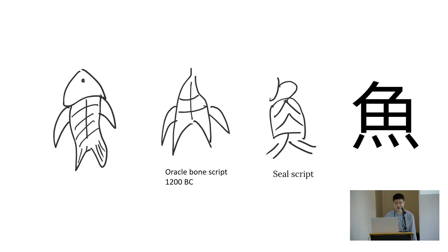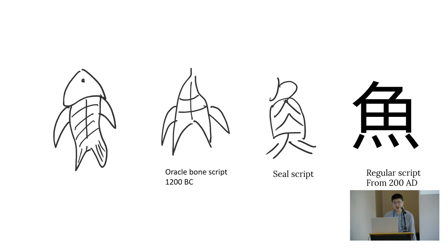And then we wrote like this, and nowadays, at least in Taiwan or in Japan, that's a regular script from around 200 AD. We write like this. Basically, it's just a picture of a fish. So it's very easy to learn Chinese — you just draw it.